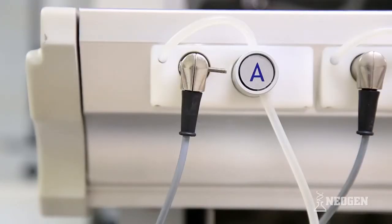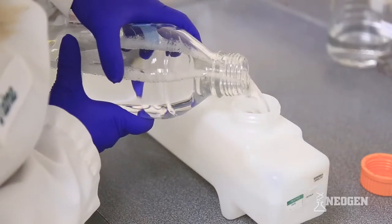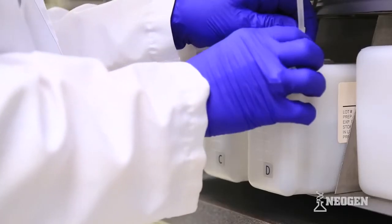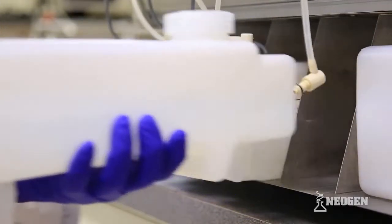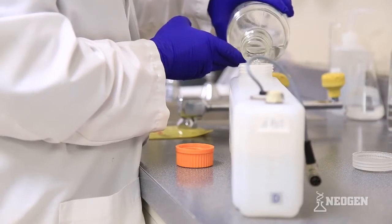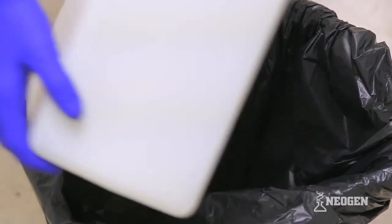Wash bottle A will need to be checked for adequate amounts of wash buffer, and if needed, diluted wash buffer will need to be added. Wash bottle D will need to be checked for adequate amounts of DI water, and if needed, DI water will need to be added. The tip waste container will need to be checked for waste and emptied after every run.